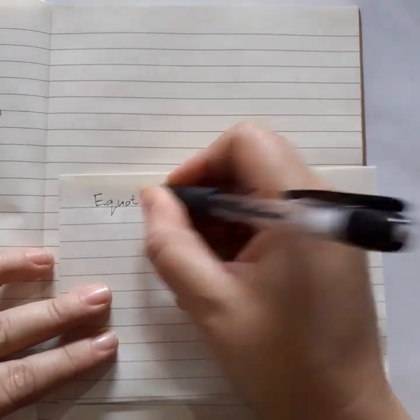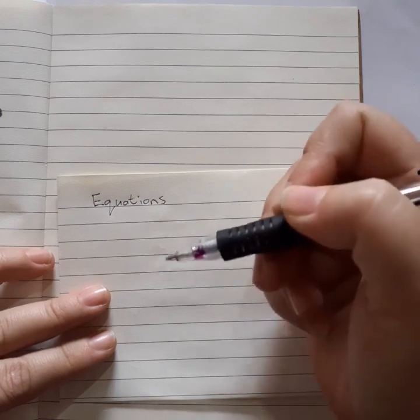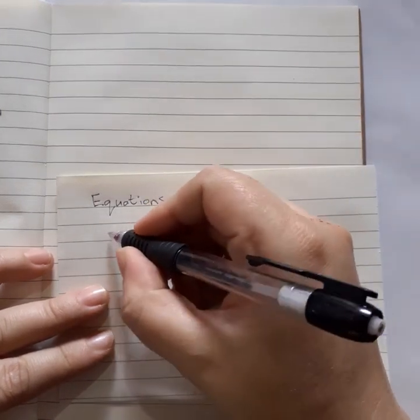So, now we're looking at, if we've got an equation, then we can work out what the value is. I'm going to show you with a very easy example.